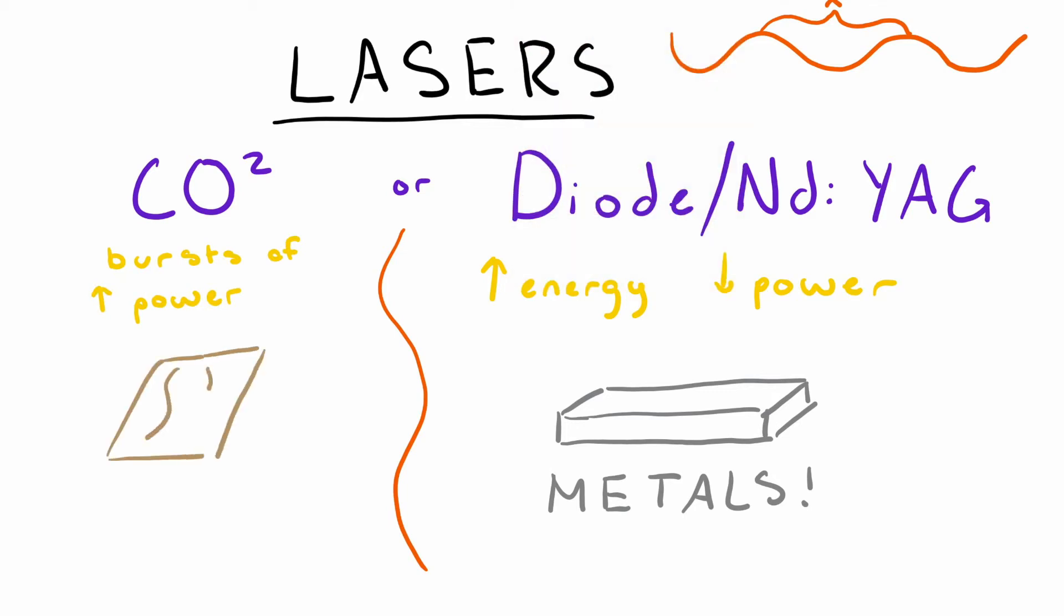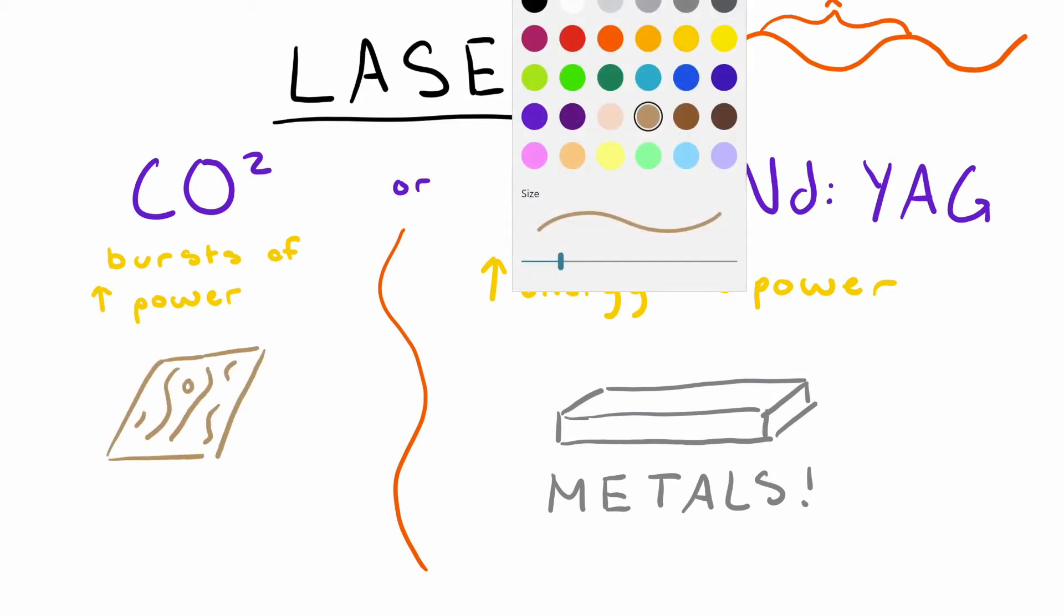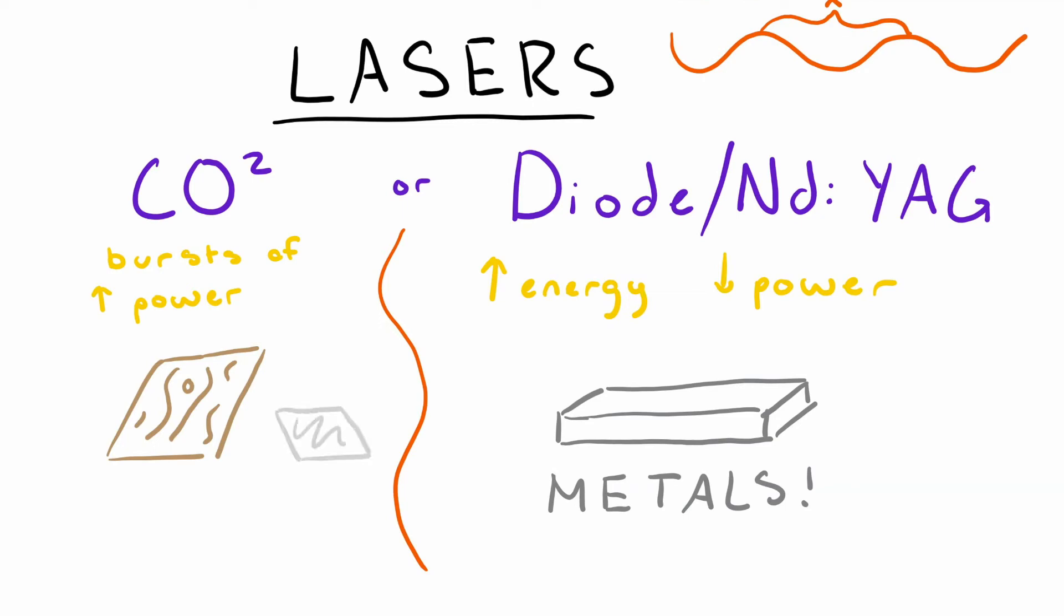CO2 lasers were built to cut through weaker materials such as wood, plastic, and leather. So they run at a higher wavelength, but use more power in short bursts of time.